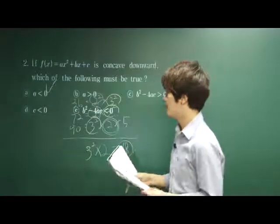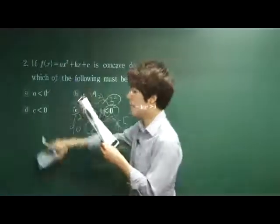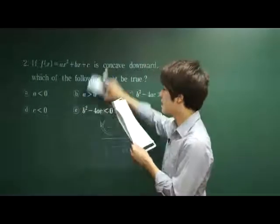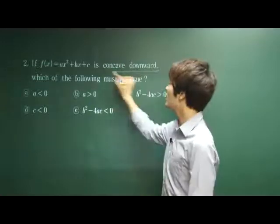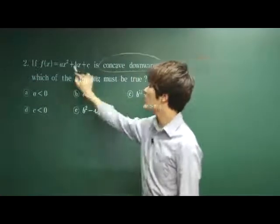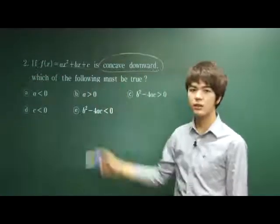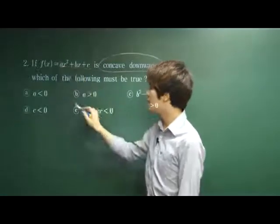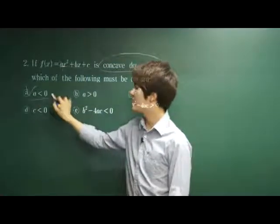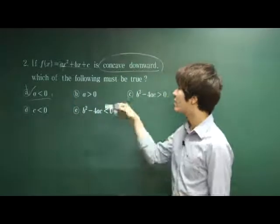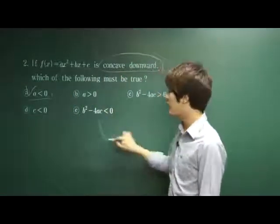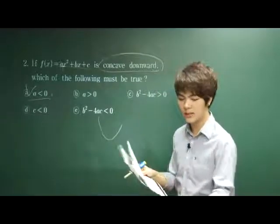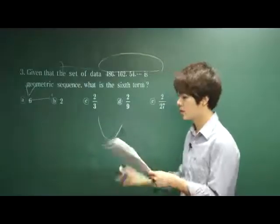Let's move on to number 2. If f(x) is ax squared plus bx plus c is concave downward, this is basic. It says concave downward, which element should be less than 0? a got to be less than 0. Therefore, answer is a. When a is greater than 0, then the graph will be concave upward. Everybody knows this.